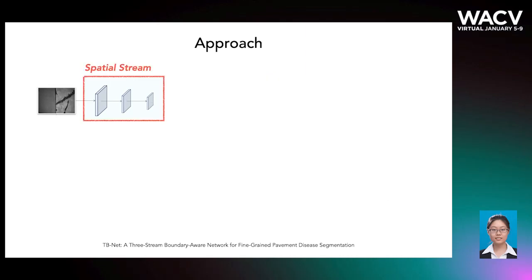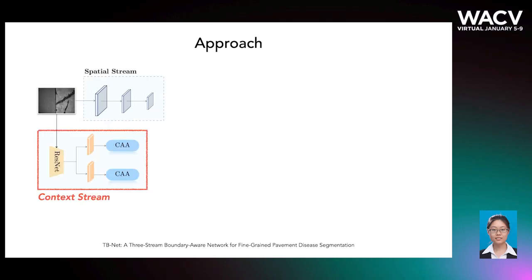Specifically, the spatial stream allows the model to preserve the spatial size of the original image as well as retaining affluent spatial information. The context stream employs two self-attention modules to capture the wide range of contextual relationships over local features.